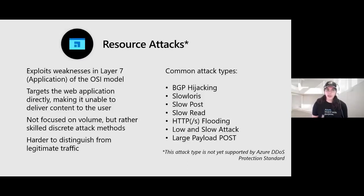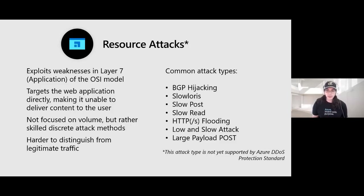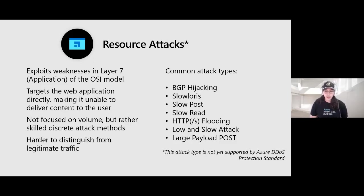Resource attacks, also known as application layer or Layer 7 attacks, target the backend server by exhausting application resources and abusing vulnerabilities in the application itself. For example, a single HTTP request is simple to execute on the client side but demands a lot from the target server — loading files, running database queries, and so on. This attack type is challenging to identify because the traffic appears legitimate. DDoS protection by itself does not protect against Layer 7 protocol attacks. We must use a web application firewall such as Azure Application Gateway WAF or Azure Front Door WAF in conjunction with DDoS protection to defend against all three attack types.